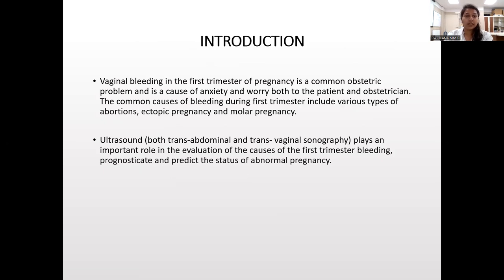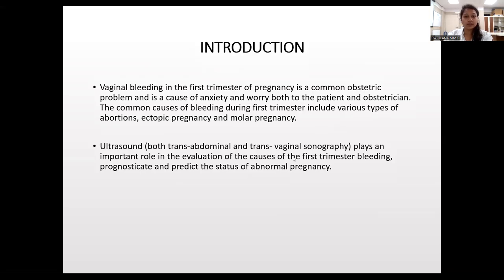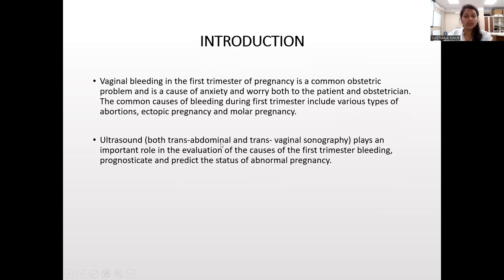Introduction: Vaginal PV bleeding in the first trimester of pregnancy is a common obstetric problem and a cause of anxiety and worry both to the patient and obstetrician. The common causes of bleeding during first trimester include various types of abortions, ectopic pregnancy, and molar pregnancy. Ultrasound, both transvaginal and transabdominal, plays an important role in evaluation of the causes of first trimester bleeding and to prognosticate and predict the status of abnormal pregnancy.